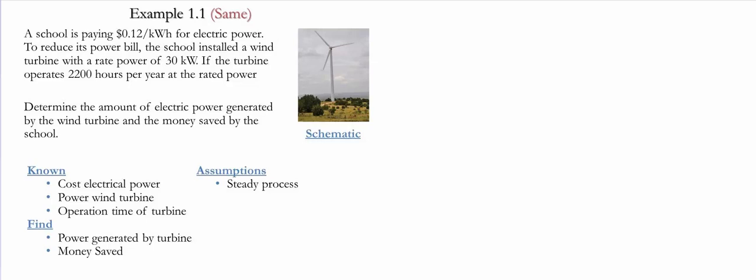To reduce the power bill, the school is installing a wind turbine which has a rate of 30 kilowatts. If the turbine operates for 2200 hours at the given rate of power, we need to determine the amount of electrical power generated by the wind turbine and the money that is saved by the school.